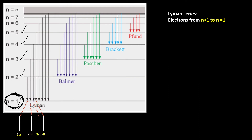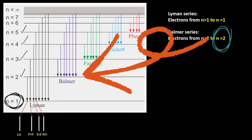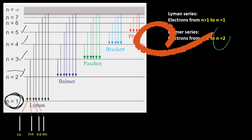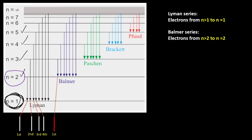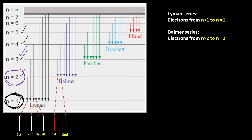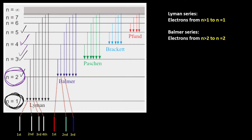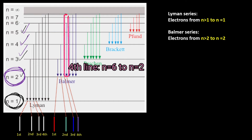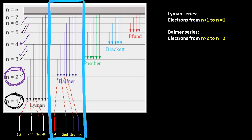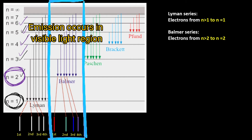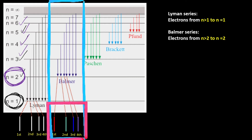To produce line spectrums in the Balmer series, electrons from higher energy levels must fall to n equals to 2. To produce the first line in the Balmer series, electrons must fall from n equals to 3 to n equals to 2. To form the second line, electrons must fall from n equals to 4 to n equals to 2. To form the third line, electrons must fall from n equals to 5 to n equals to 2. To form the fourth line, electrons must fall from n equals to 6 to n equals to 2 and so on. Because the Balmer series emission occurs in the visible light region, the discrete lines produced will be coloured and we can see the colour with our naked eyes.